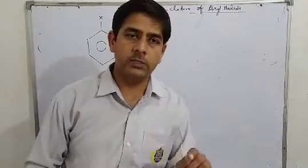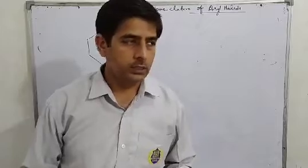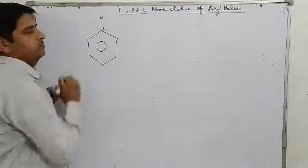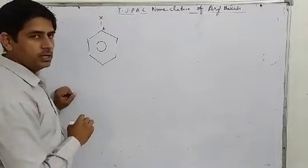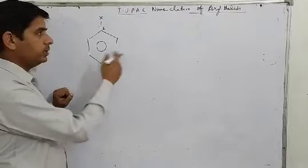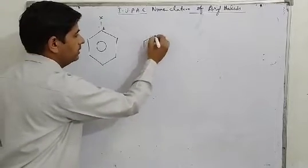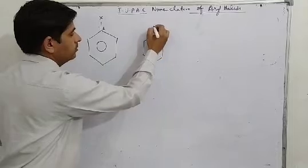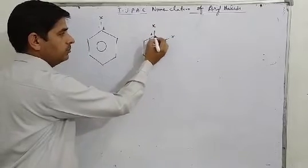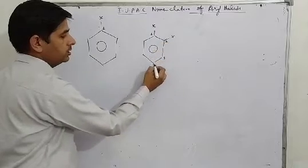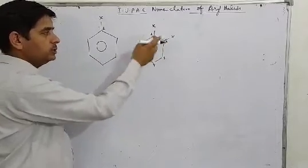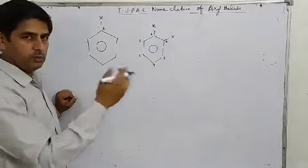These numbers show the position of the halogen. The carbon where the halogen is attached is called position 1. Then you see where the next group is attached and number accordingly. For example, if we have two halogens: number 1, 2, 3, 4, 5, 6 — if both halogens are at positions 1 and 2, then we name them accordingly.